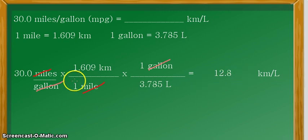So, we now know that 30.0 miles per gallon is equivalent to 12.8 kilometers per liter. So, that is our final answer. And that is all for this. Thank you for listening and continue learning.